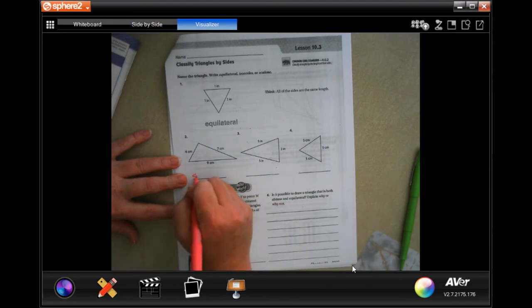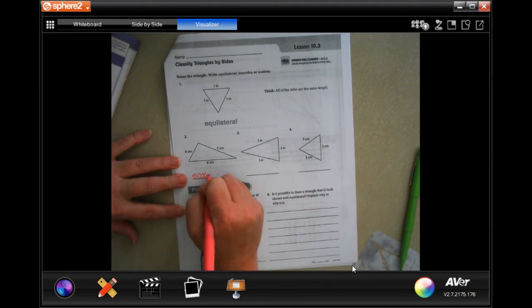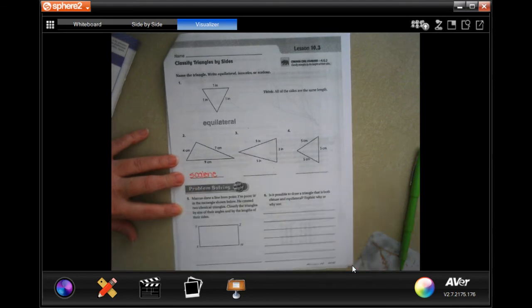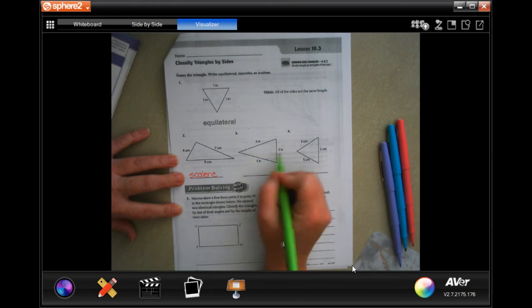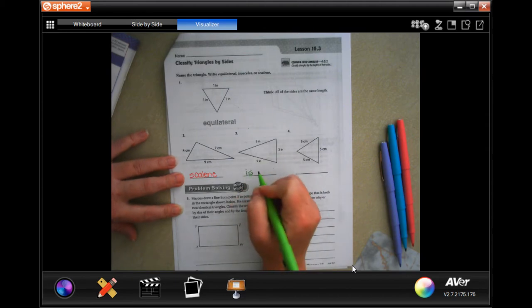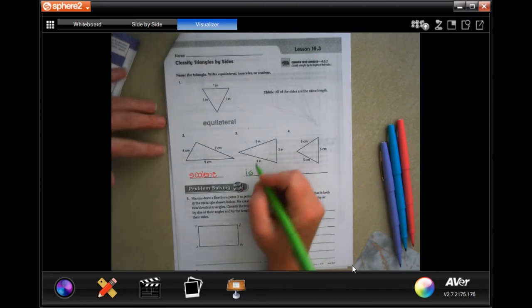So scalene. Okay, now two of these are the same and one is different and it looks like an ice cream cone, so isosceles. I'm going to spell this wrong if I don't look at it.